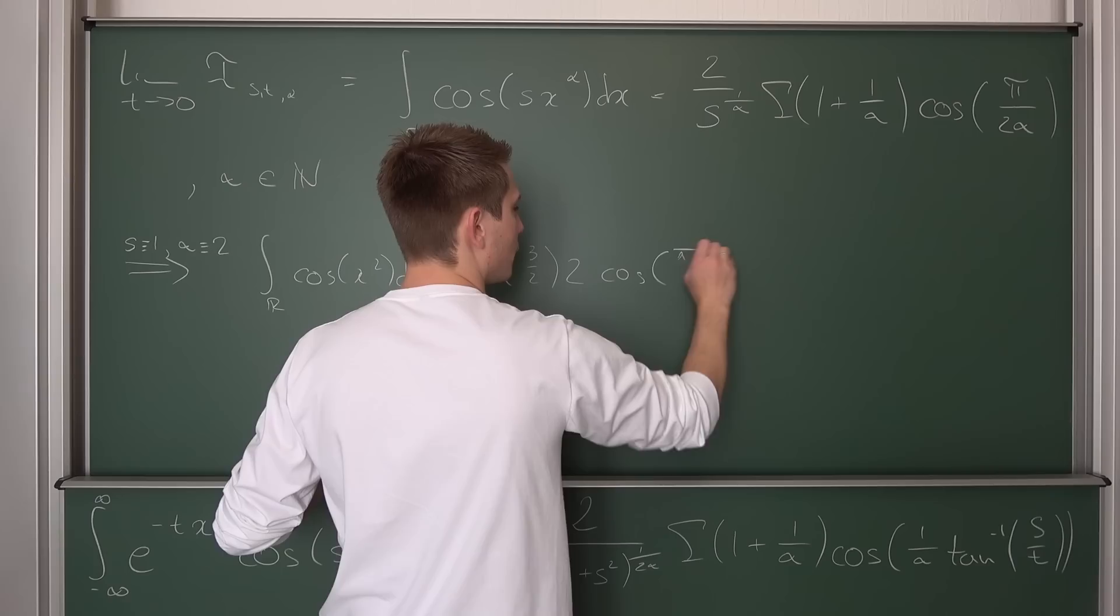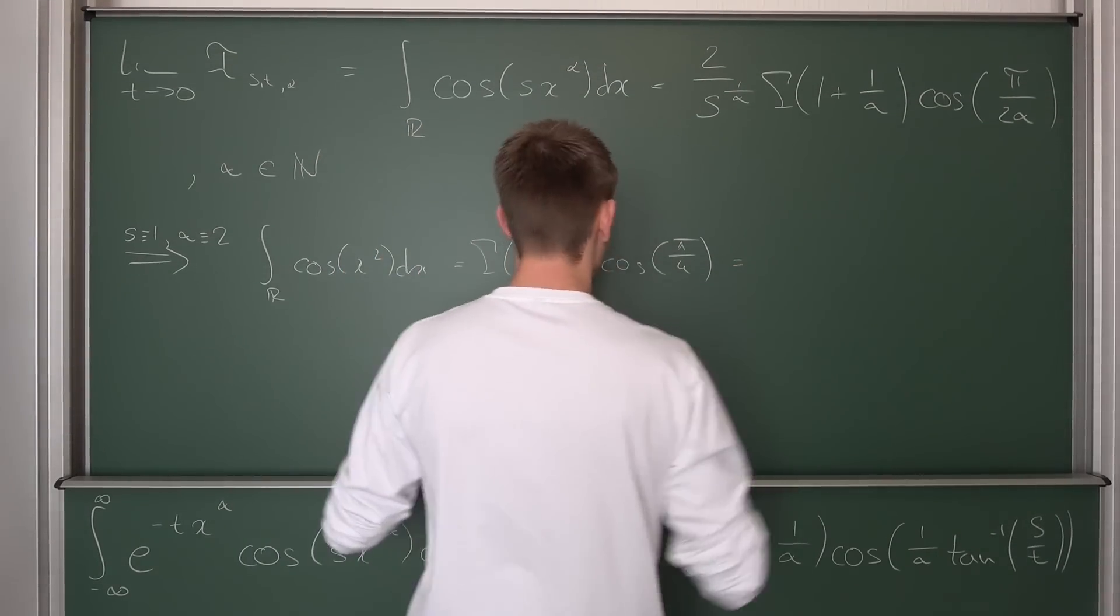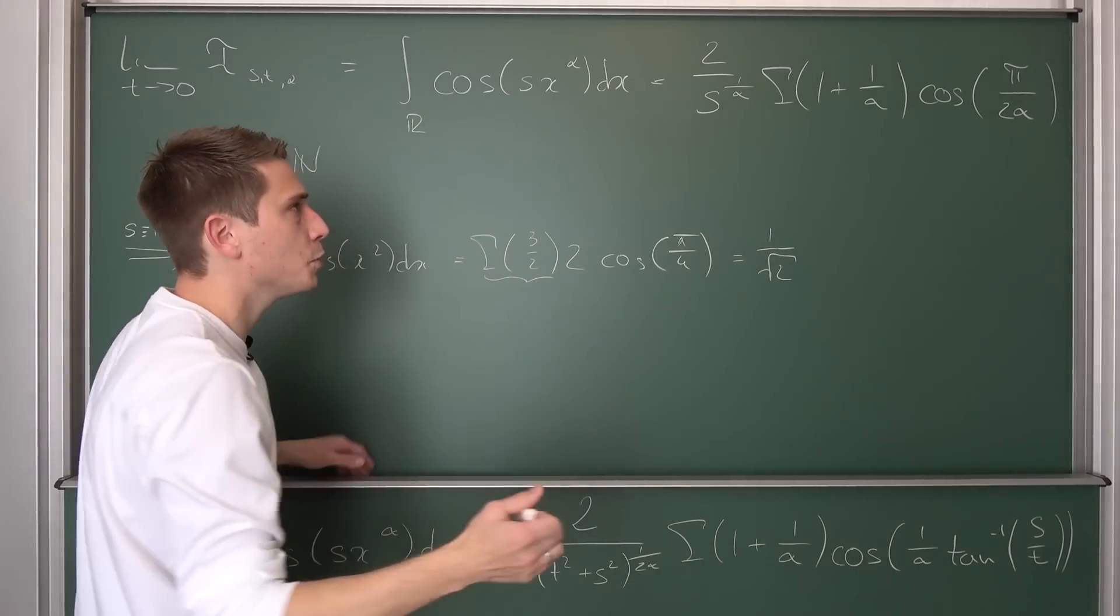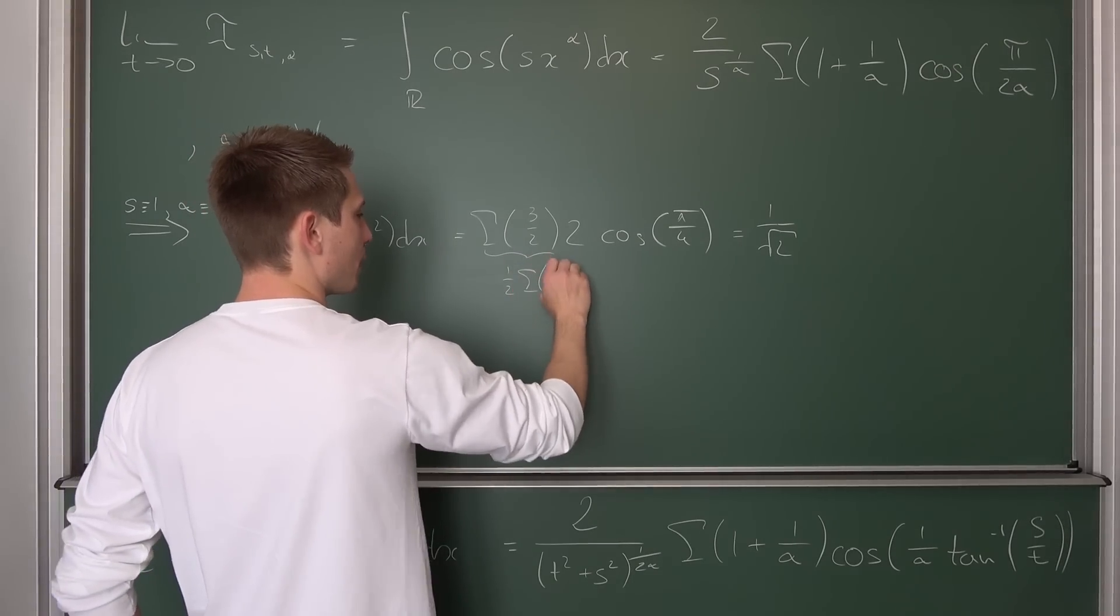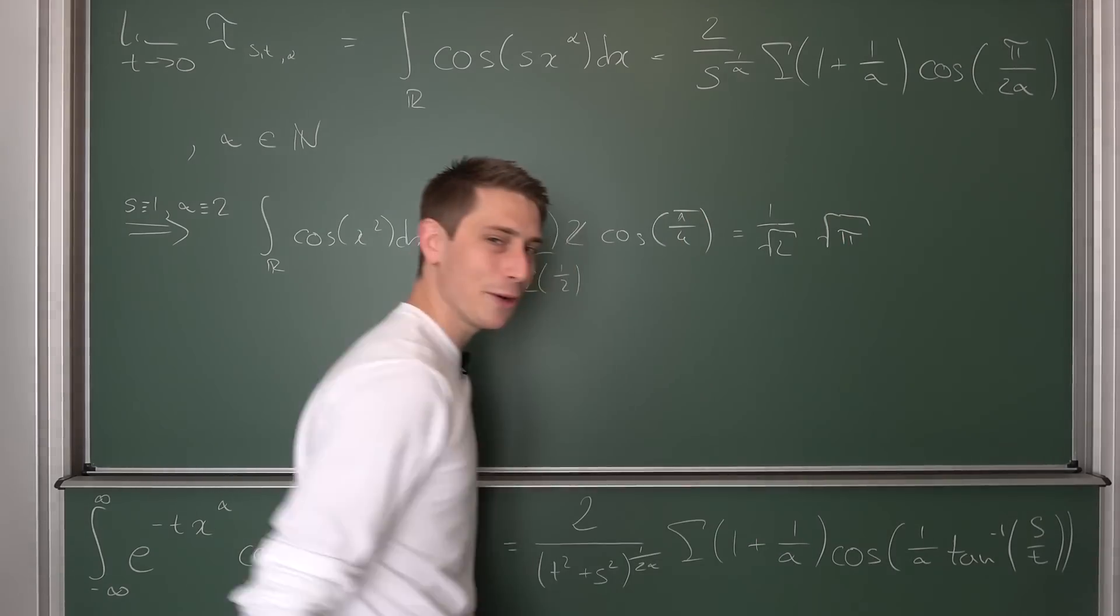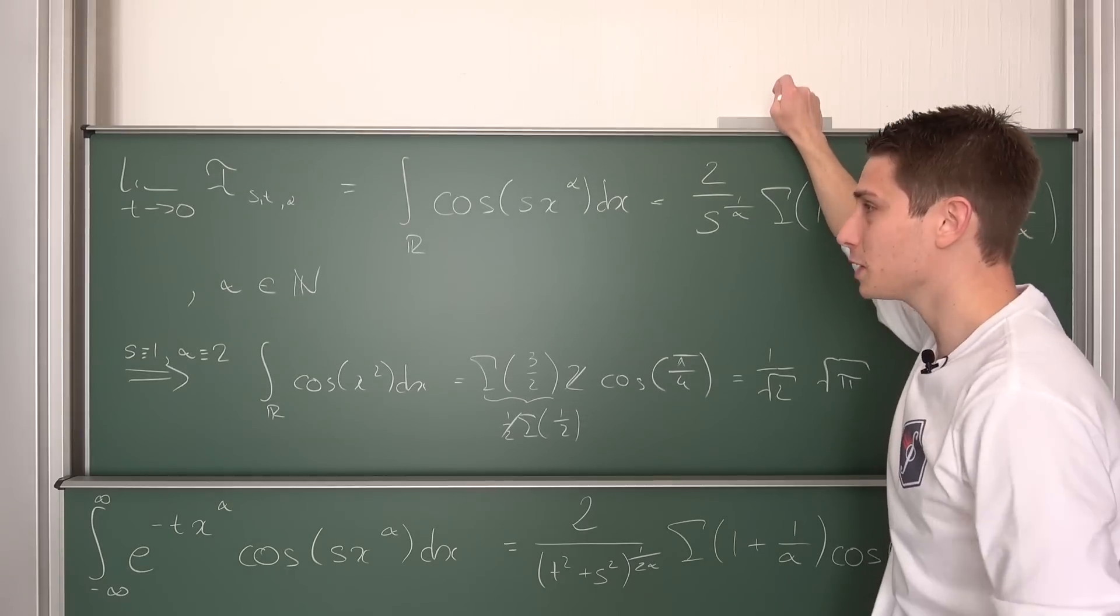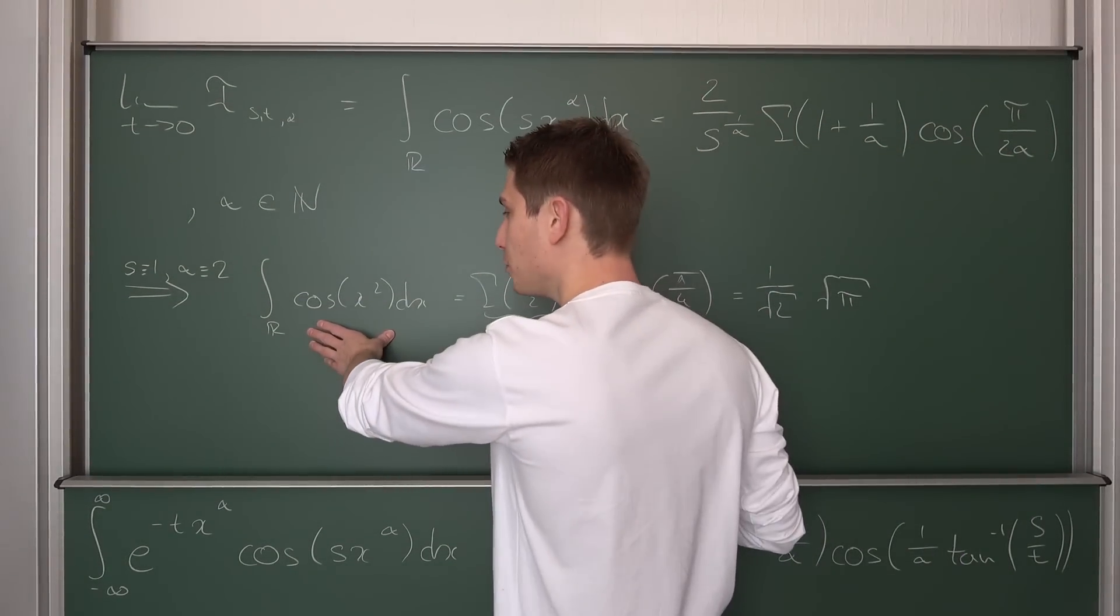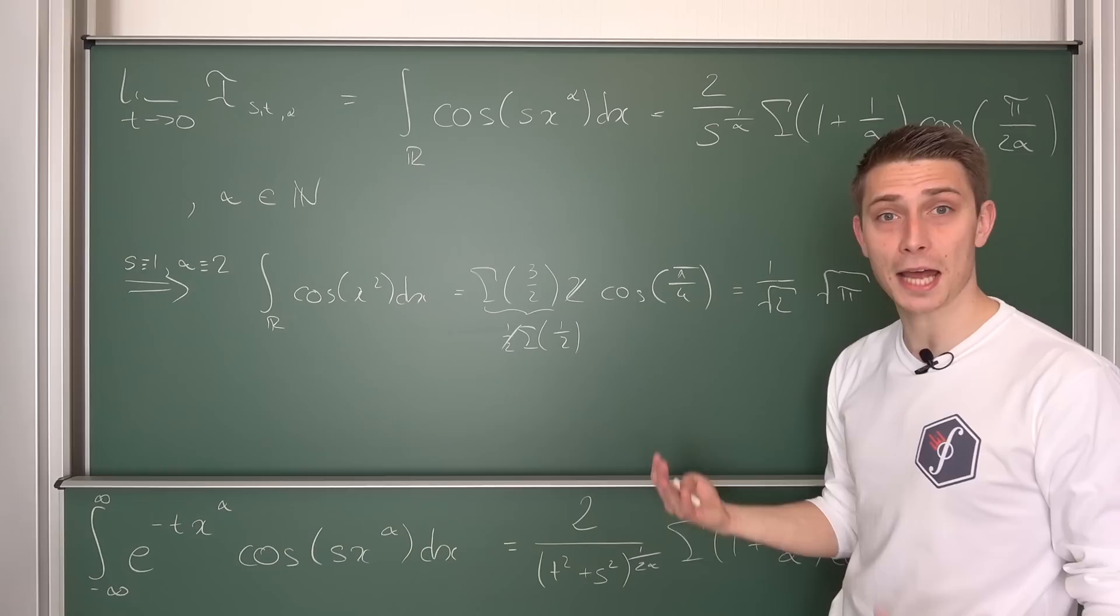Times two—the two that we have here—times the cosine of π over 4. Cosine of π over 4 is exactly the intersection point of the cosine and the sine, which is 1 over √2. This is 1 over √2. Also, Gamma of 3/2—we have rewritten this thing equivalently as 1 over α times Gamma of 1 over α—is nothing but 1/2 times Gamma of 1/2. One half and two is going to cancel out, Gamma of 1/2 is √π, and there we go—Fresnel integrals done.